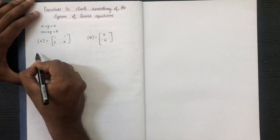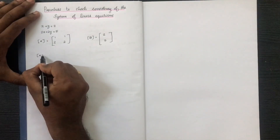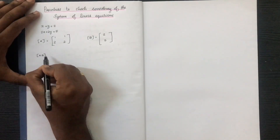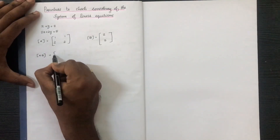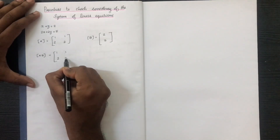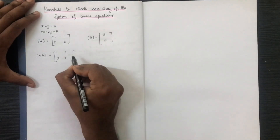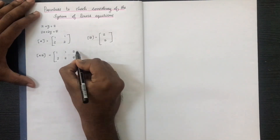Now we are going to study the augmented matrix A|B, which is equal to: row one is 1, 1 and row two is 2, 2, with the constant column being 2 and 5.